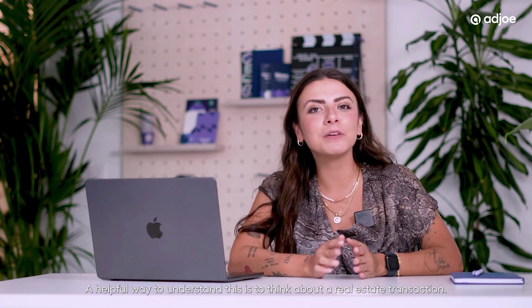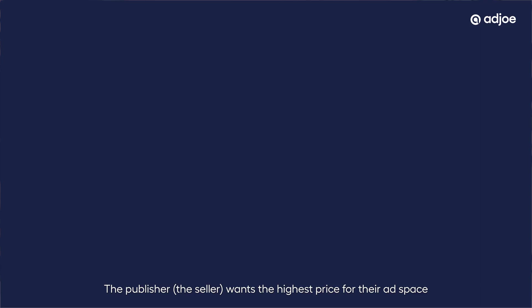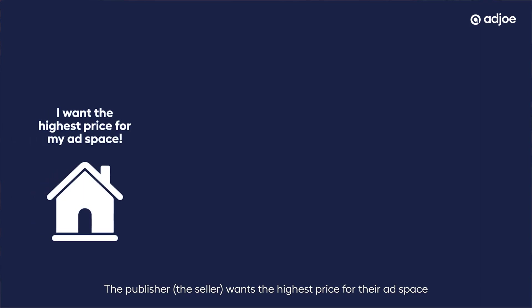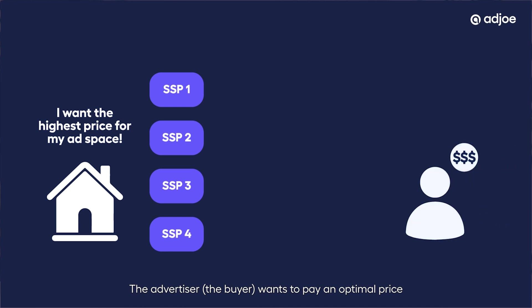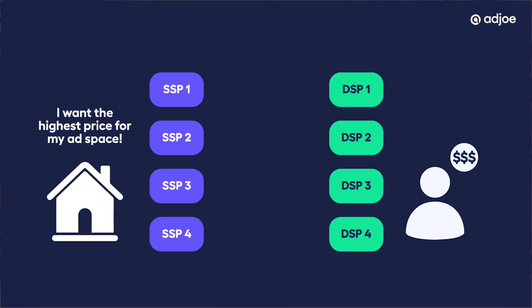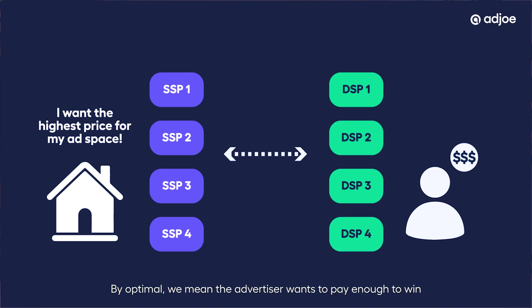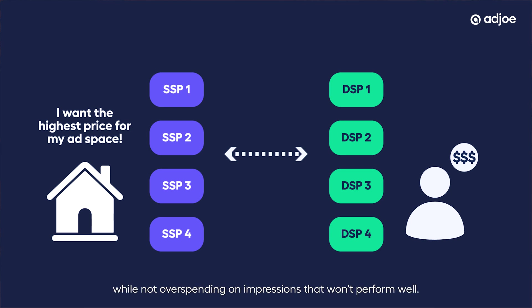SSPs and DSPs operate on opposite sides of the ad exchange ecosystem. A helpful way to understand this is to think about a real estate transaction. The publisher — the seller — wants the highest price for their ad space and is represented by the SSP as their agent. The advertiser — the buyer — wants to pay an optimal price for quality inventory and uses a DSP as their broker. By optimal, we mean the advertiser wants to pay enough to win quality ad placements that will drive results, while not overspending on impressions that won't perform well — a balance the DSP's algorithms help achieve through intelligent bidding strategies.